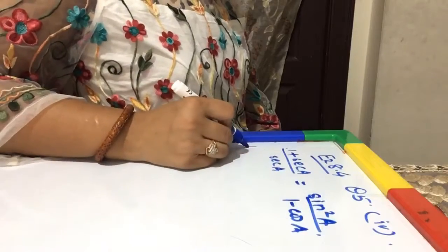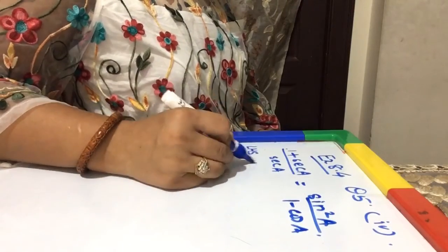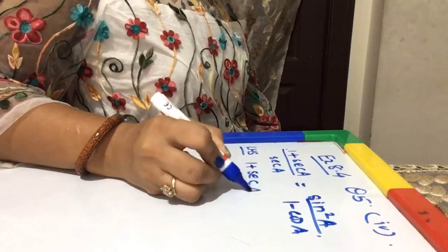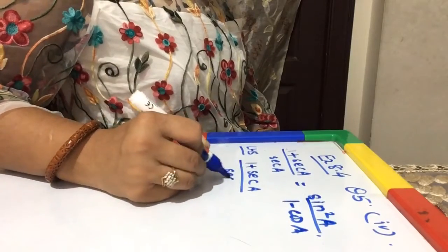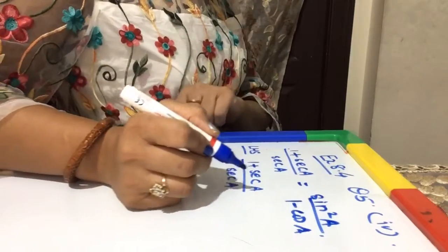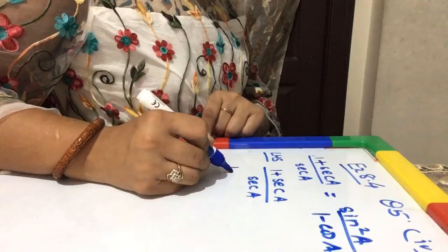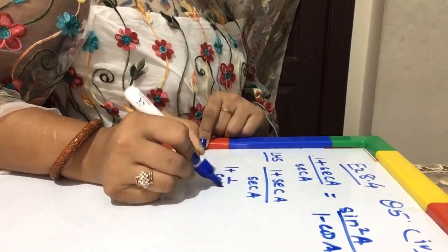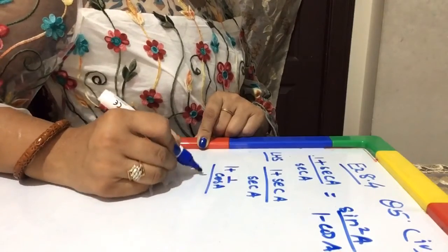So first I will take LHS and simplify it. It is (1 + sec A) / sec A. Sec A can be written as (1 + 1/cos A) / (1/cos A).